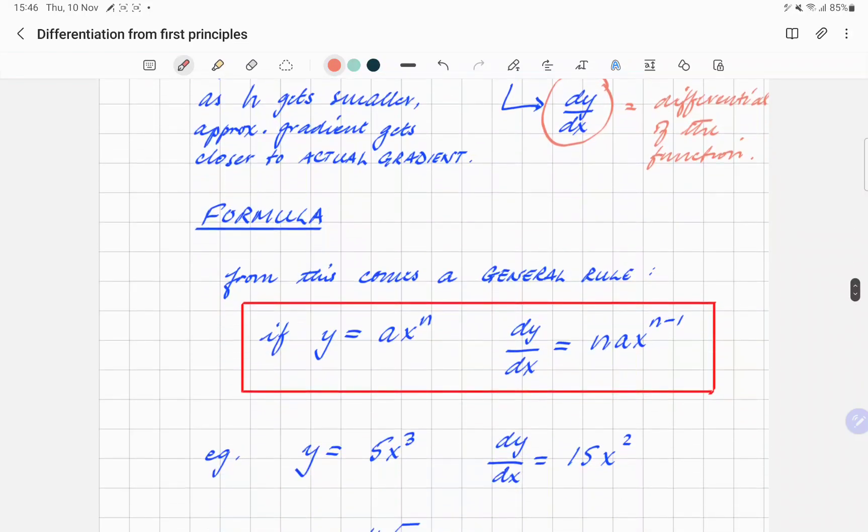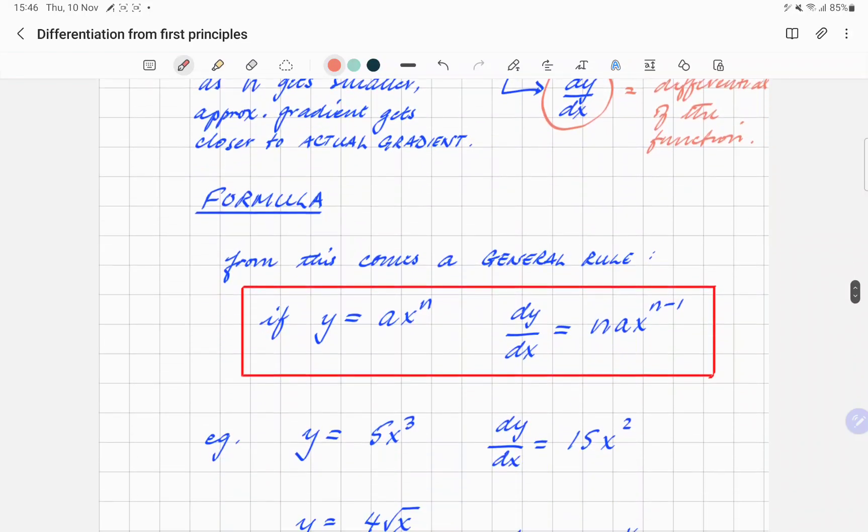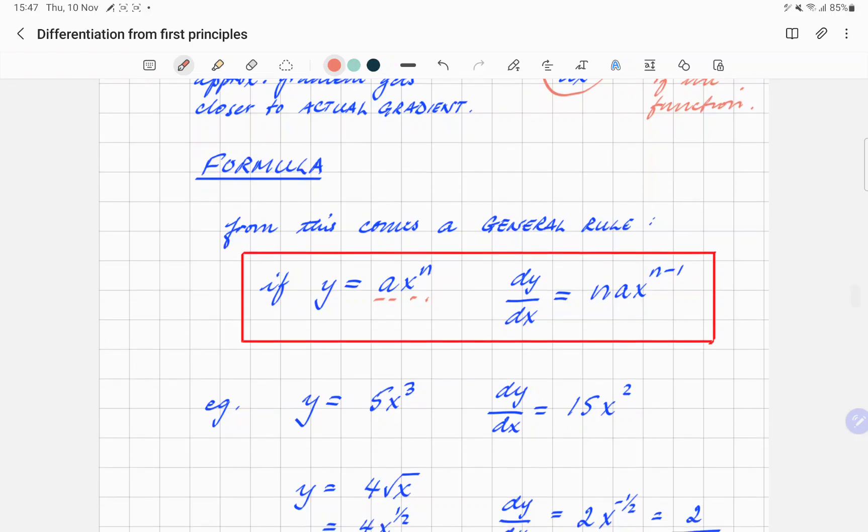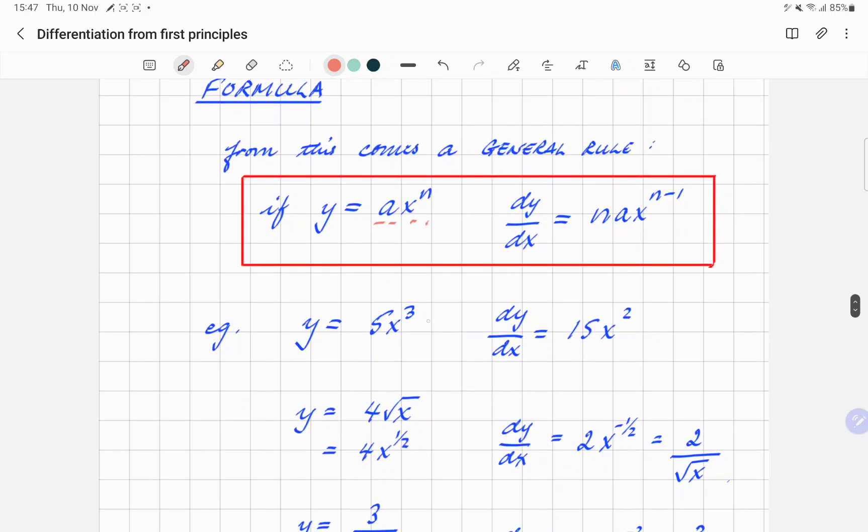Now from that we get this general formula. If y equals some coefficient a times x to the power n - this is a simple polynomial - then the gradient function of that original curve will be given by n times the original coefficient a and x to the power n-1. So what we actually do is bring the power down and multiply there, and then reduce the power by 1.